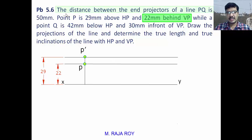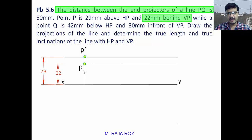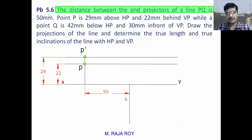The distance between the end projectors of line PQ is 50mm — that means the distance between projector PP dash and projector QQ dash is 50mm. From the projector through PP dash, take 50mm distance and draw another projector. On this projector you will get Q and Q dash.